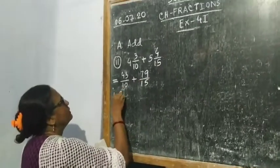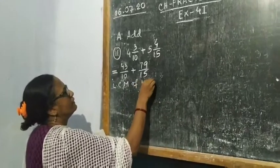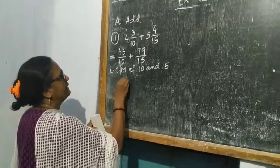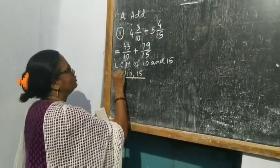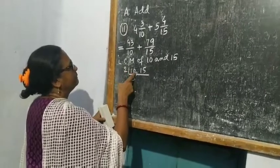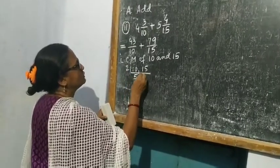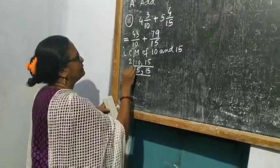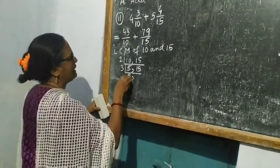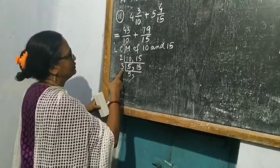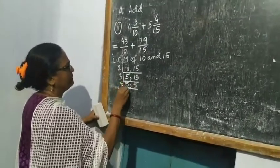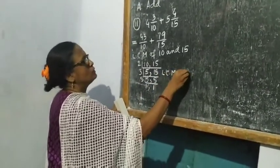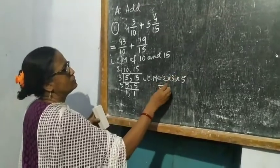Now you take the LCM of 10 and 15, using the repeated division method. First divide 10 and 15 by 2: 10 divided by 2 is 5, and 15 is not divisible by 2 so write 15. Next divide by 3: 5 is not divisible by 3 so write 5, and 15 divided by 3 is 5. Again divide by 5: giving 1 and 1. So LCM is equal to 2 into 3 into 5, which is 30.